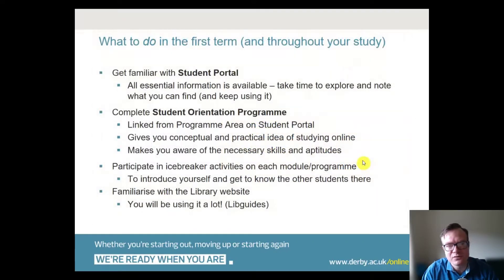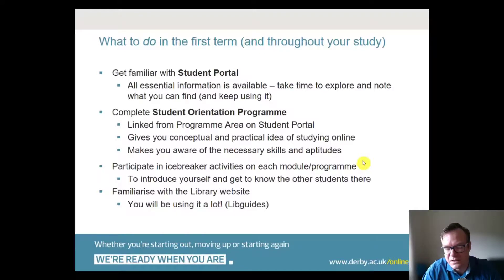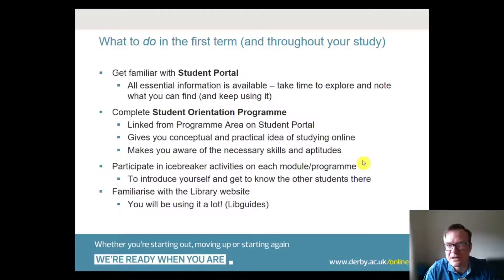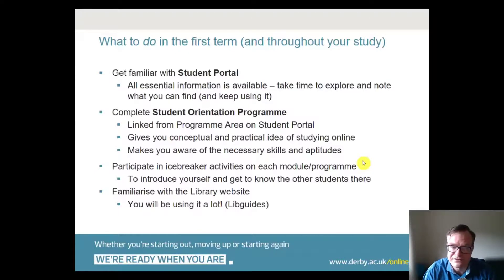In the first term and throughout your study, the first thing to do is get familiar with the student portal, which gives you access to all essential information. There is a student orientation programme you should complete — it covers applying for support plans, late submissions, and practical hints and tips for studying online, which can be quite a shift if you're used to face-to-face programmes. Participate in icebreaker activities for each module, introduce yourself to other students, and familiarise yourself with the library website and libguides, which you'll be using frequently.